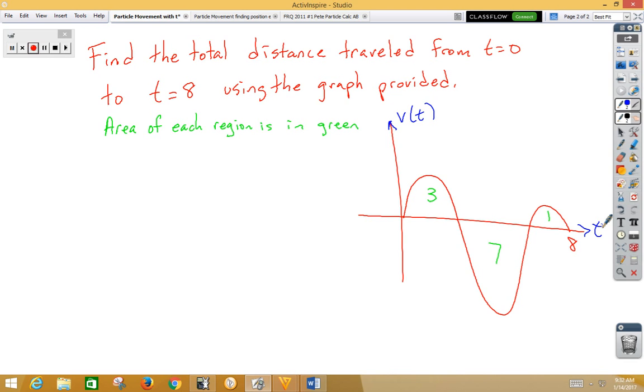All right. So if we're doing total distance traveled, again, we are adding up all of the areas. So we are integrating from 0 to 8 of our velocity function, dt. But because it's total area, we're talking about absolute value. So absolute value of this would be 3 plus positive 7 plus 1, which would be 11.